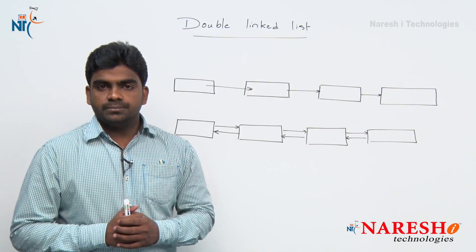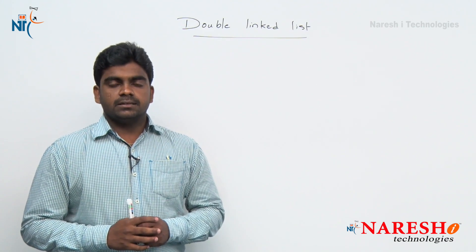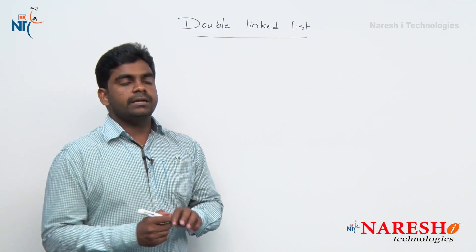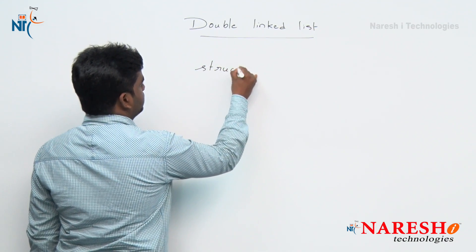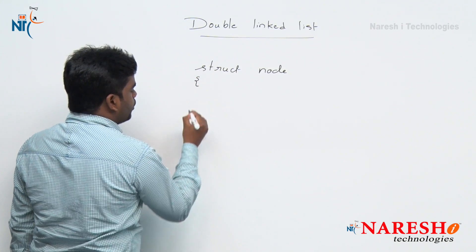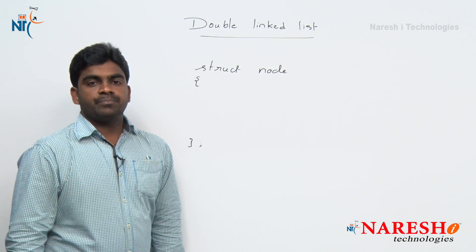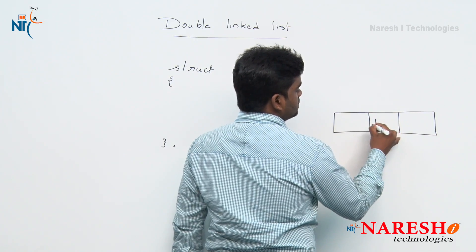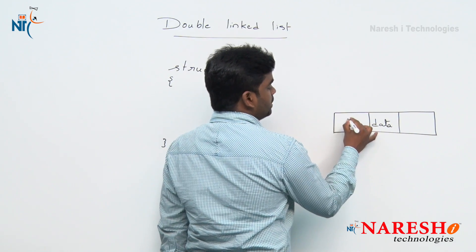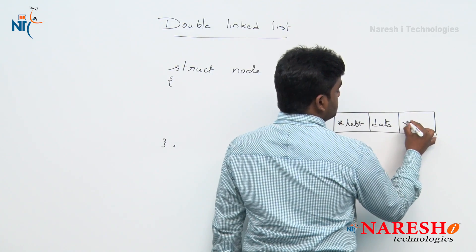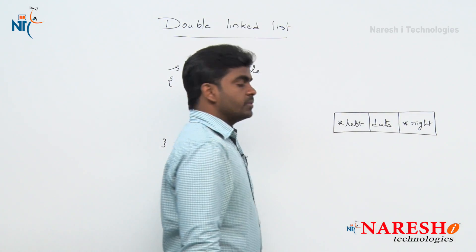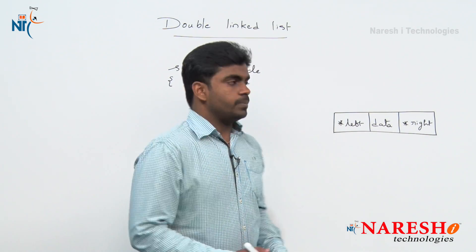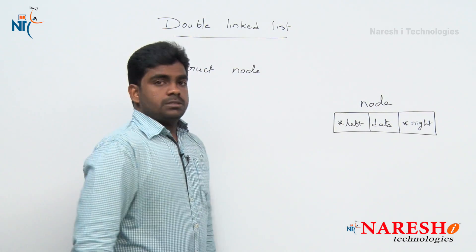How will the node structure be? In a single linked list, a node is a structure data type. In a double linked list also, if you want to create a node, we use struct node. In a double linked list the node has three fields: a data field, a left link field, and a right link field. Two pointers - one pointing to the previous node and one pointing to the next node.